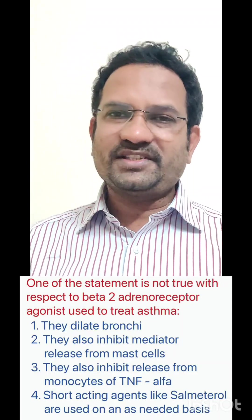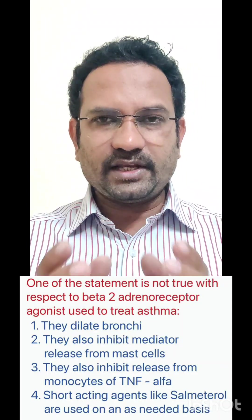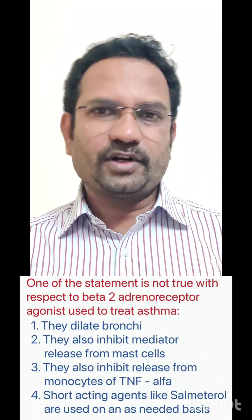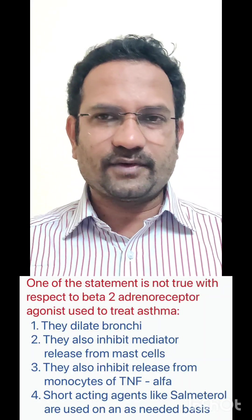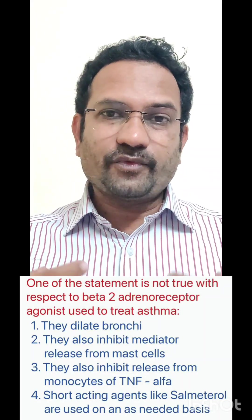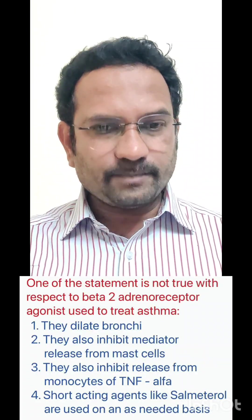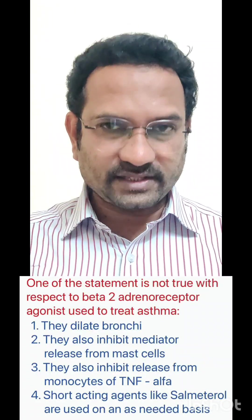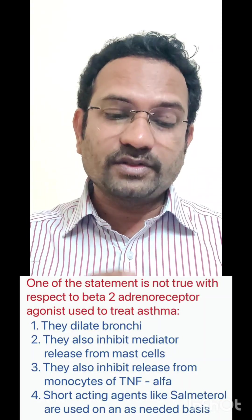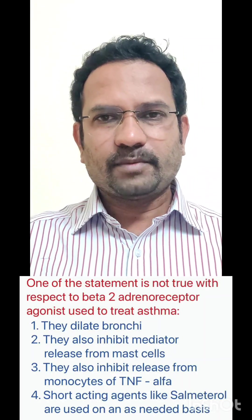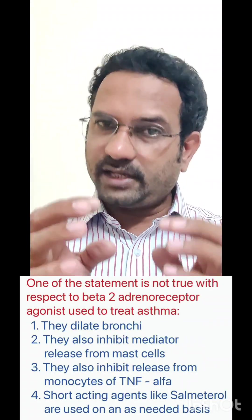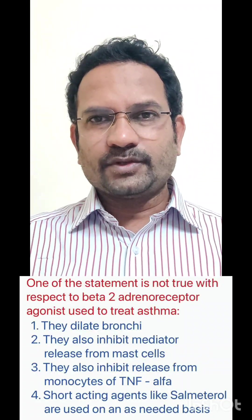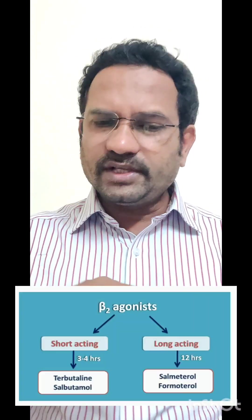Beta-2 adrenoreceptor agonists act on Gs-type G-protein-coupled receptors present on many cells in the lungs. Their actions are varied: they cause bronchodilation, inhibit mediator release from mast cells, and inhibit release of tumor necrosis factor alpha. All three of those statements are true, though we often only remember bronchodilation. So the false statement must be option four.